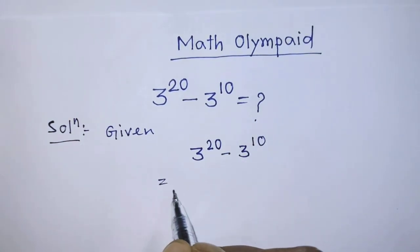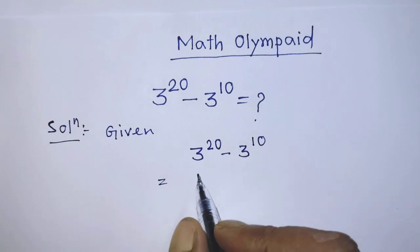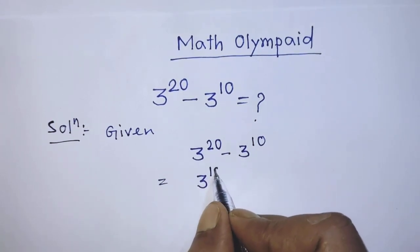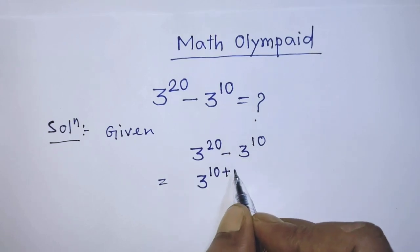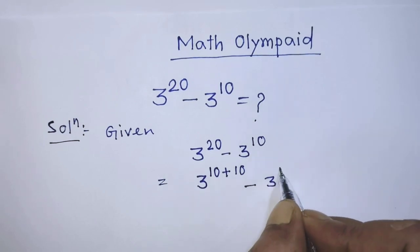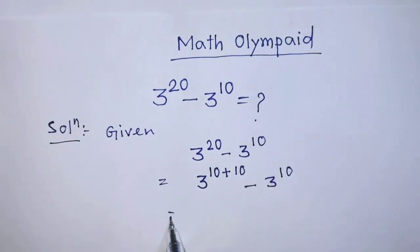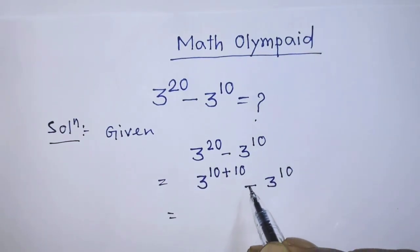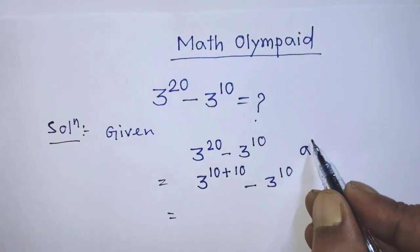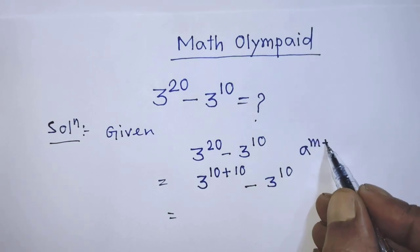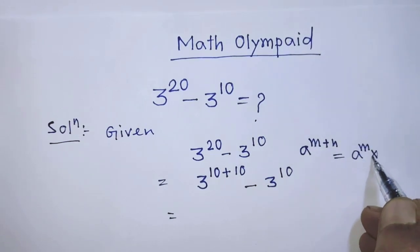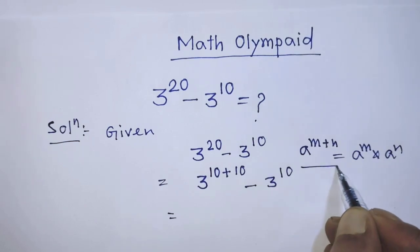In the first step of the solution, it will be 3 to the power 10 plus 10, minus 3 to the power 10. To simplify this exponential form, we have to apply the formula: a to the power m plus n is equal to a to the power m times a to the power n.